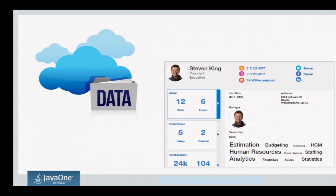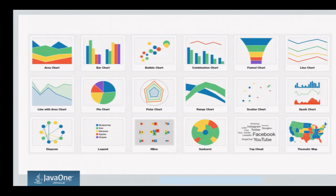Everyone wants to be in the browser nowadays — browser on the desktop, browser on devices, browser on mobile phones, browser on iPad, whatever. That's where you want to be. And JavaScript is the language of the browser, so Oracle wants a place there as well. These kinds of charts and graphs are the kinds of things you would want in these applications to visualize various kinds of data.